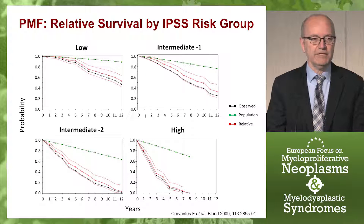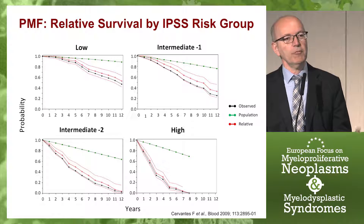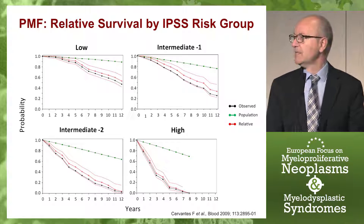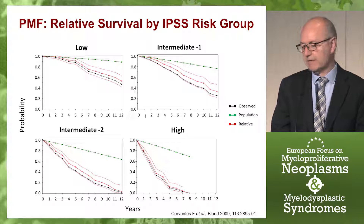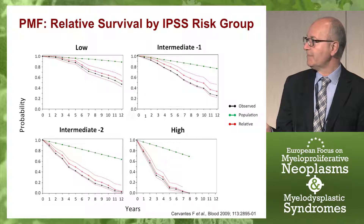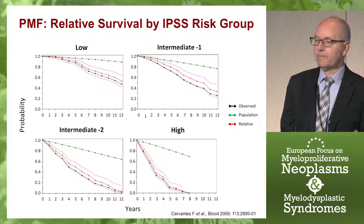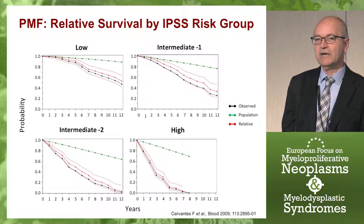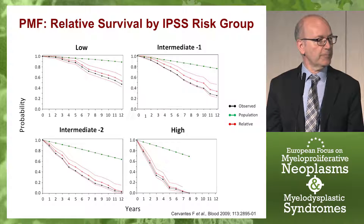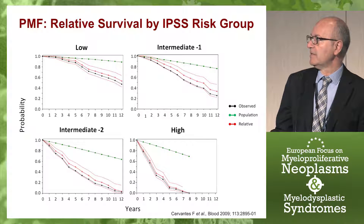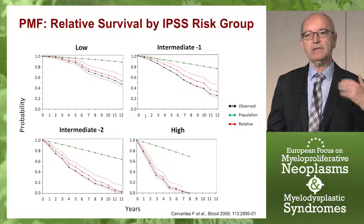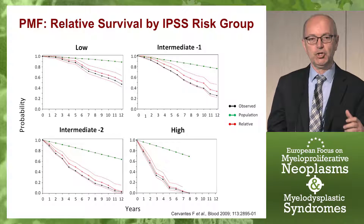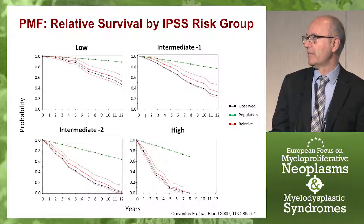But what about patients in the earlier risk group — in the earlier phases of the disease, patients with low or intermediate-one risk myelofibrosis? We know that these patients had a relatively long life expectancy. For instance, patients with low-risk myelofibrosis during the first five years had the same mortality as the control population, while patients with intermediate-one risk during the first three years had the same mortality.